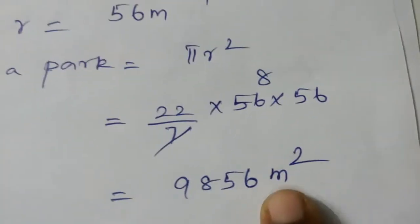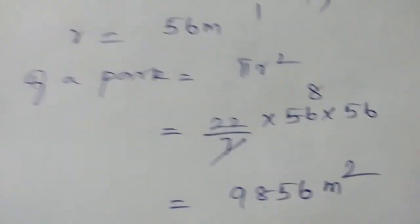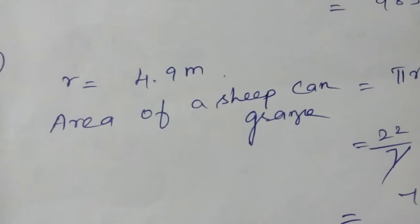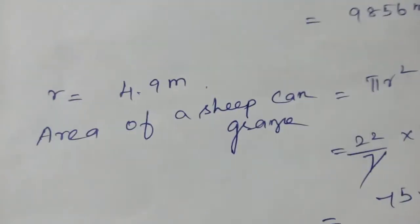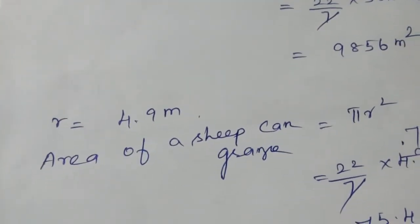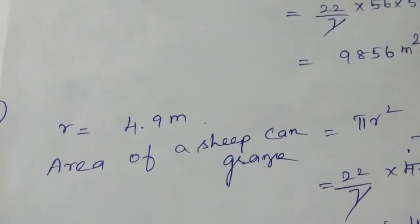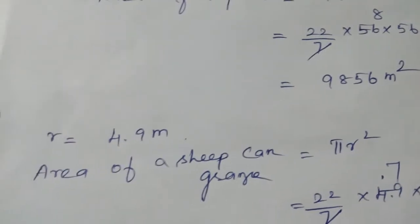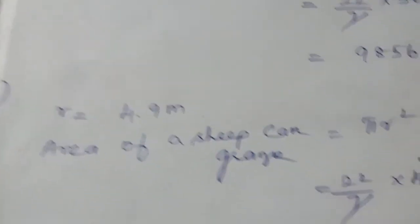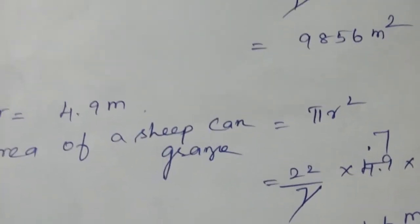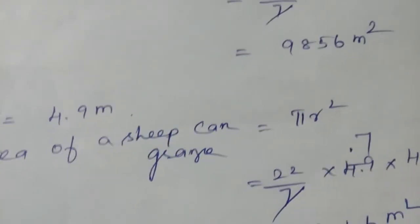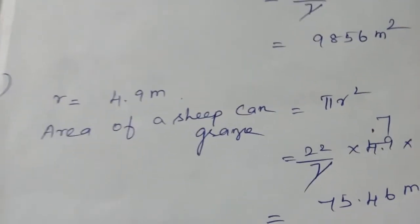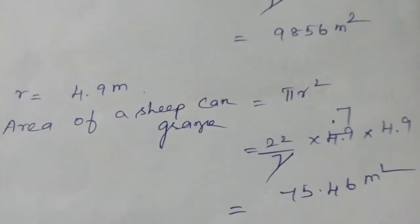The fifth question: in a grassland, a sheep is tethered by a rope of length 4.9 meters. Find the maximum area the sheep can graze. Since the sheep moves in a circle with radius equal to the rope length, r equals 4.9 meters.